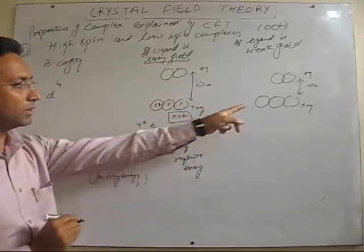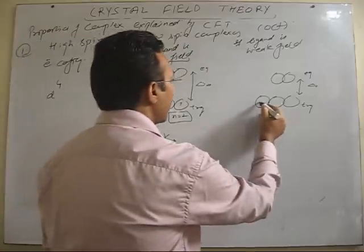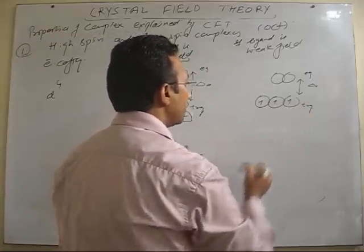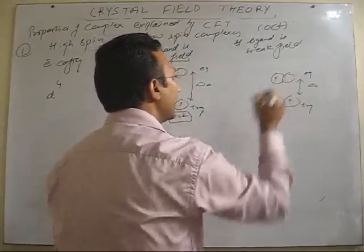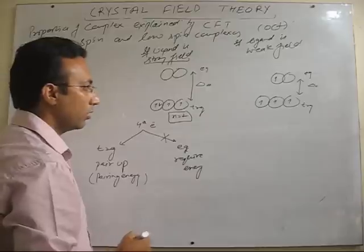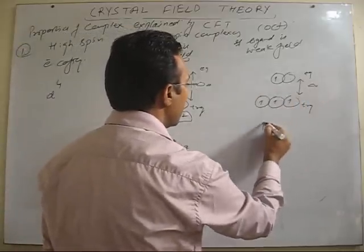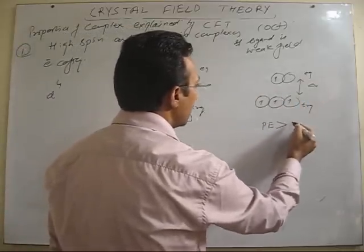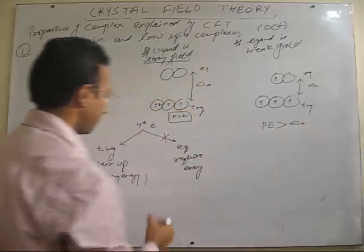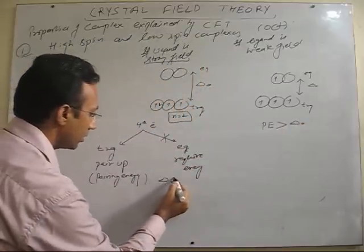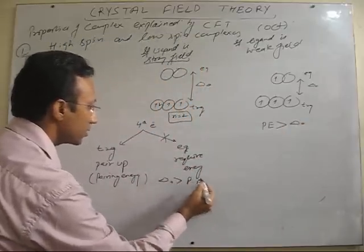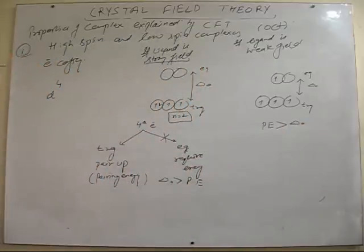If the arrangement is weak field, then, in this case, after filling of 3, the fourth electron will go in eg set of orbital. Because, in this case, this gap is very less. Here, pairing energy is more than delta naught. And, here, delta naught is more than the pairing energy. So, in...